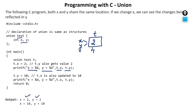Now when you update the value of Y — T.y = 10 — this changes the shared memory from 2 to 10. So the final value becomes 10. Now when you print again the value of X and Y through T.x and T.y, T.x gives 10 and T.y also gives 10, since they point to the same memory location.